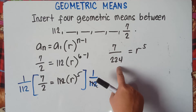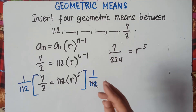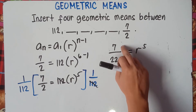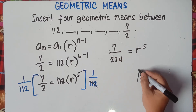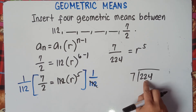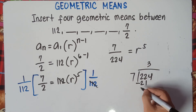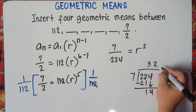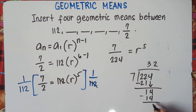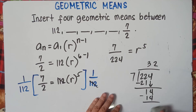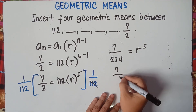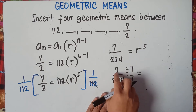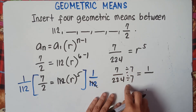Let's check if we can divide 224 by 7. So 224 divided by 7: 22 divided by 7 is 3, 3 times 7 is 21, subtract to get 1, bring down 4, 14 divided by 7 is 2, 2 times 7 is 14, remainder 0. So we can reduce 7 over 224 by 7: 7 divided by 7 is 1, and 224 divided by 7 is 32.